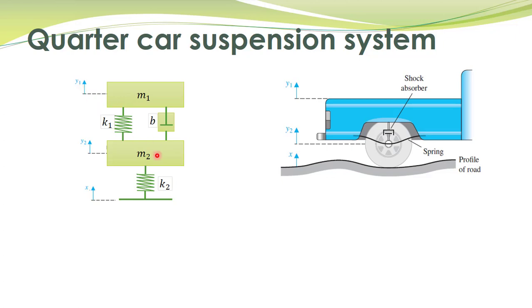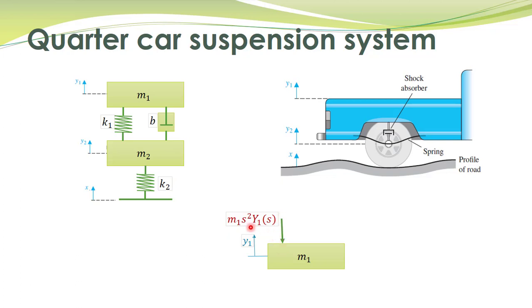We remember the procedure to obtain a mathematical model for mechanical systems. The first step is to draw free body diagrams. Let's first draw the free body diagram for displacement y1. Here we have mass M1 with displacement y1 in the upward direction. The forces acting on this mass include a force due to inertia, which is opposite to the direction of acceleration — that is, in the downward direction — and its magnitude is proportional to acceleration, which in the Laplace domain is the position multiplied by s squared.